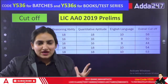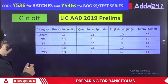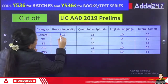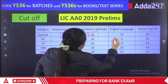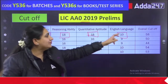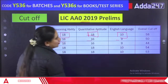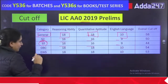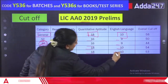Moving forward, let's discuss the cutoff — the 2019 cutoff for prelims and mains. For prelims 2019, in the general category: reasoning was 18, quant was 18, English was 10, overall total was 58. For SC category: 16, 16, 9 — total 50. For ST: 16, 16, 9 — total 44. For OBC: 18, 18, 10 — total 54. For EWS: 18, 18, 10 — total 53.